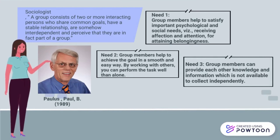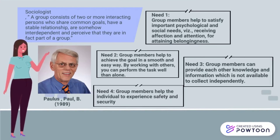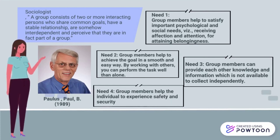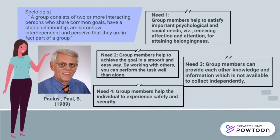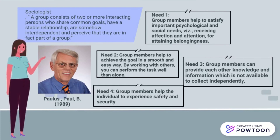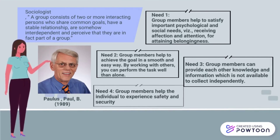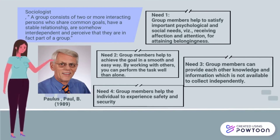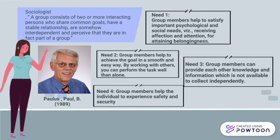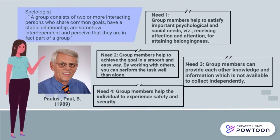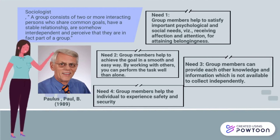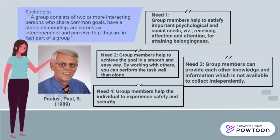These are the needs of group membership. Need number one: group members must satisfy important psychological and social needs, receiving affection and attention for attaining belongingness. Need number two: group members help to achieve goals in a smooth and easy way — by working with others, you can perform tasks better than done alone. Need number three: group members can provide each other knowledge and information which is not available to collect independently. Need number four: group members help the individual to experience safety and security.